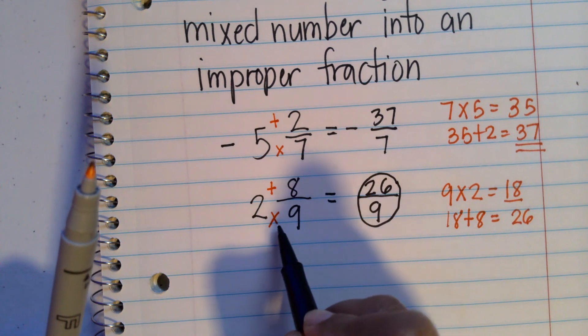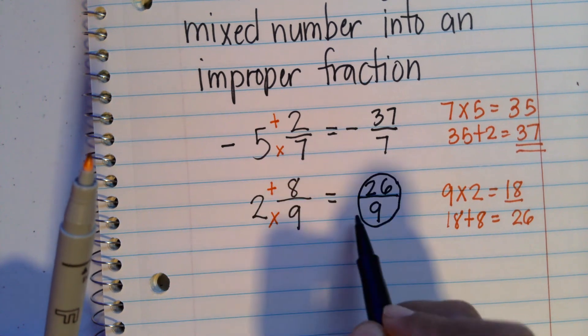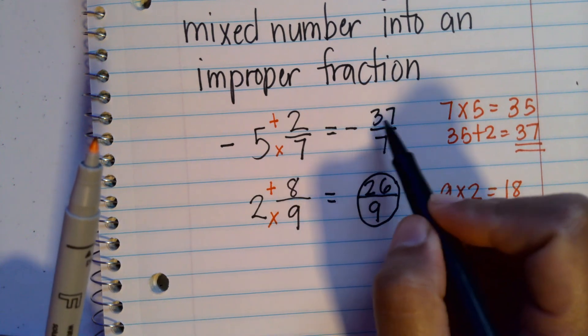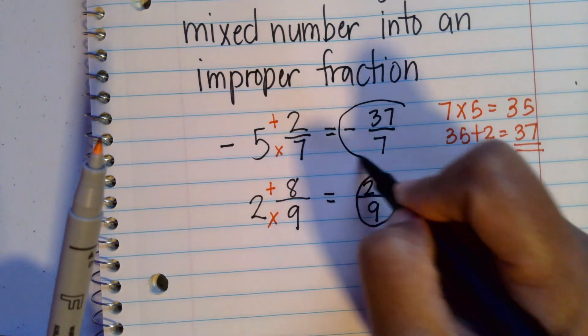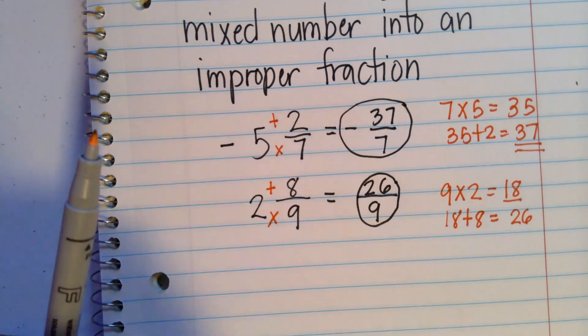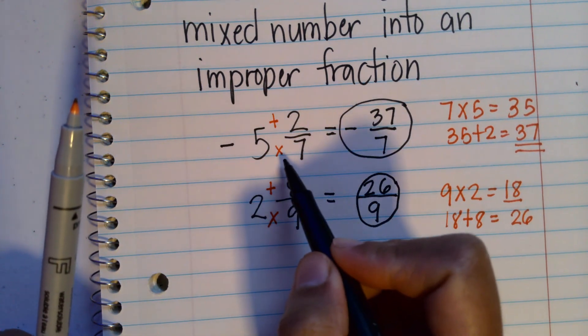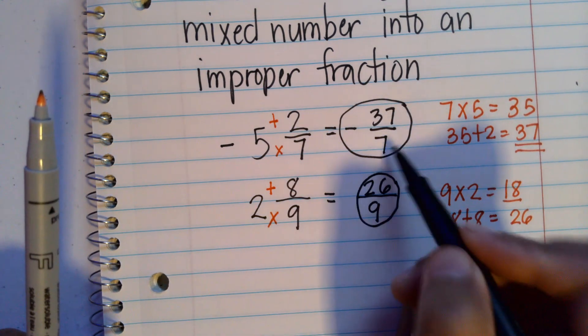And that 26 over 9 is equivalent or has the same value as 2 and 8 over 9. This negative 37 over 7 is equivalent to negative 5 and 2 over 7. And there are cases when you do have to change the mixed number into an improper fraction.